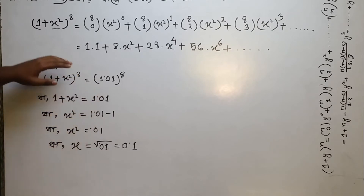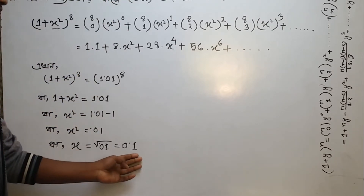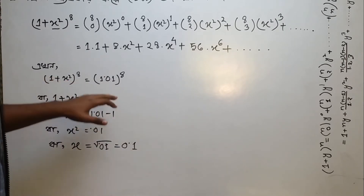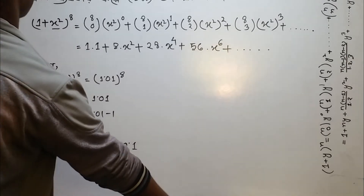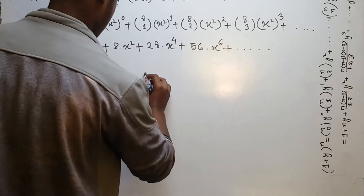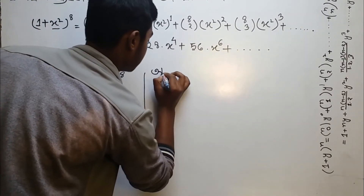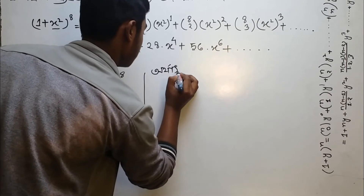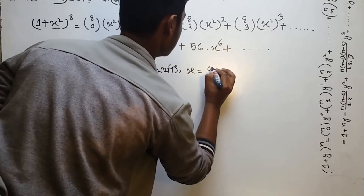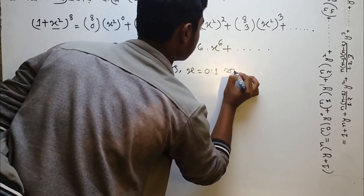We will now make the substitution. The substitution goes from right to left, then the result will be on the right side. So, x is equal to 0.1.